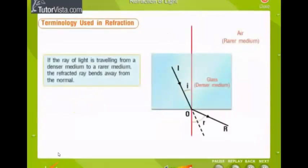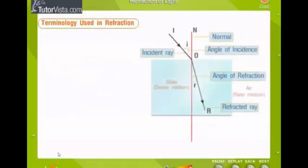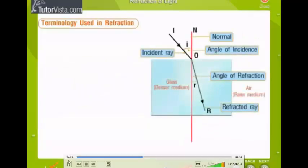If the ray of light is traveling from a denser medium to a rarer medium, the refracted ray bends away from the normal. Here, IO is the incident ray, OR is the refracted ray, I is the angle of incidence, and R is the angle of refraction. In this case, angle I less than angle R. For definitions, click on the labels.